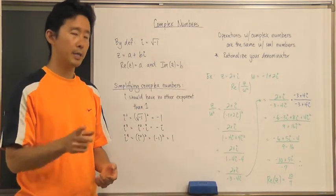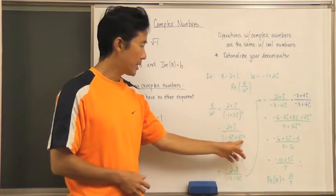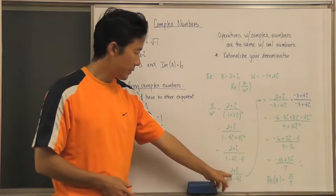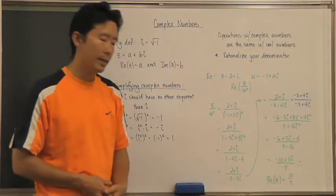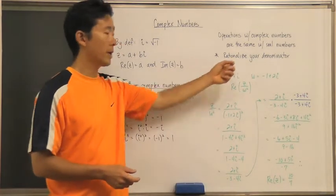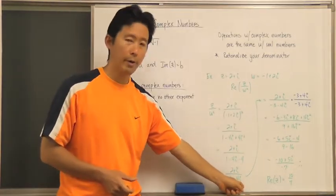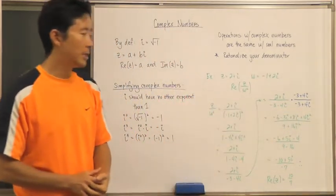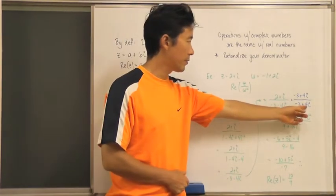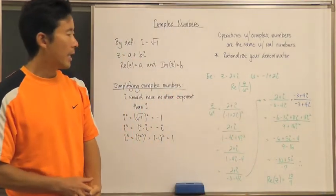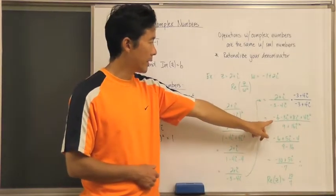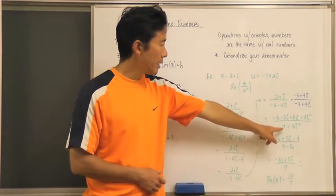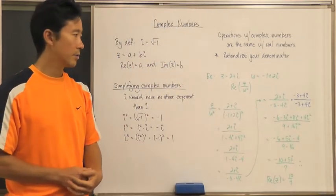Since i squared equals negative one, the denominator becomes one minus four i minus four, which simplifies to negative three minus four i. We then multiply numerator and denominator by the conjugate of the denominator, negative three plus four i over negative three plus four i, and apply FOIL to get negative six minus three i plus eight i plus four i squared, all over nine plus sixteen i squared.